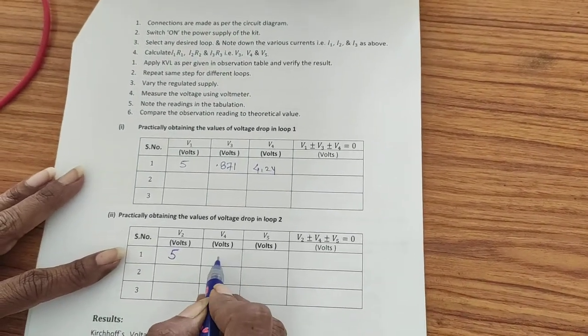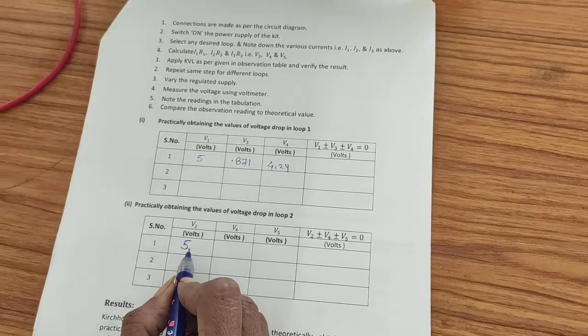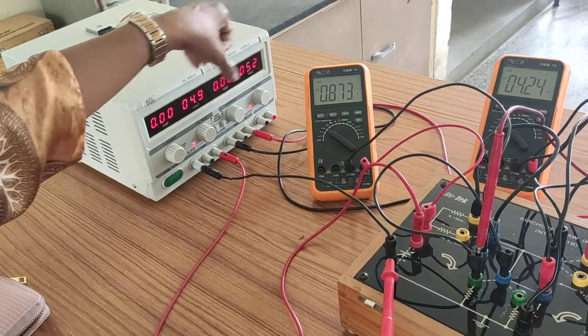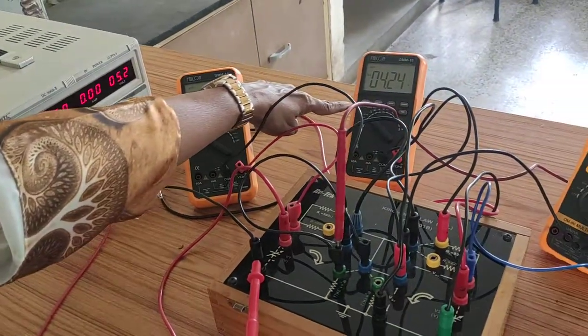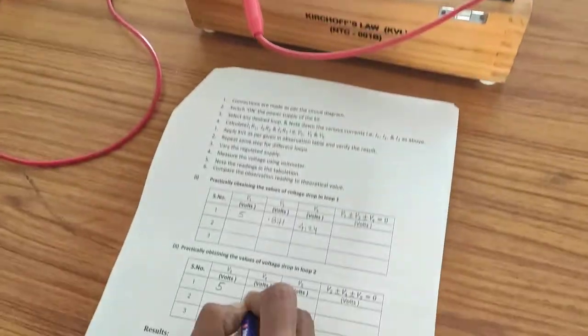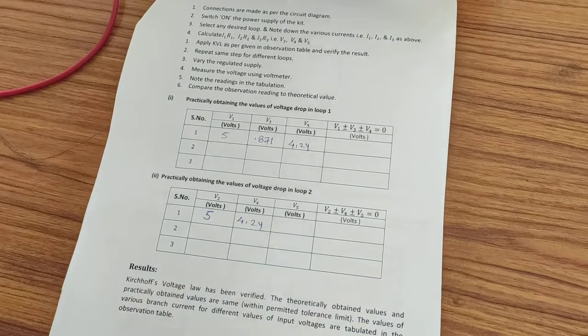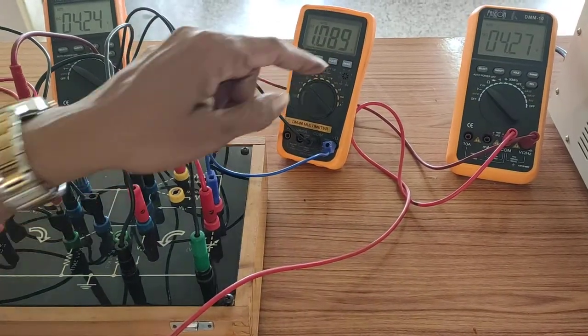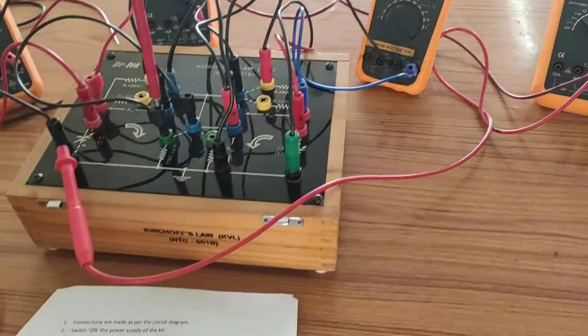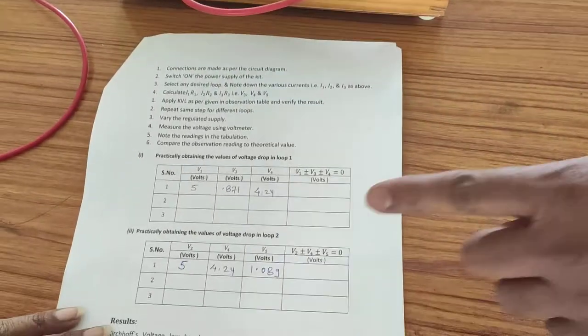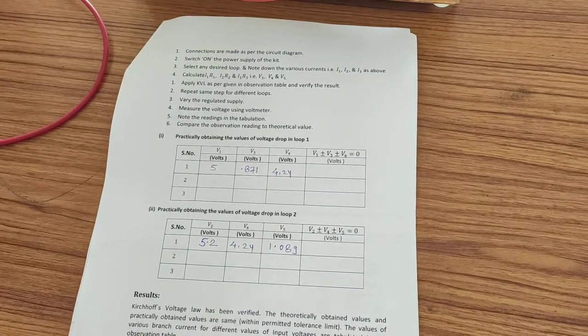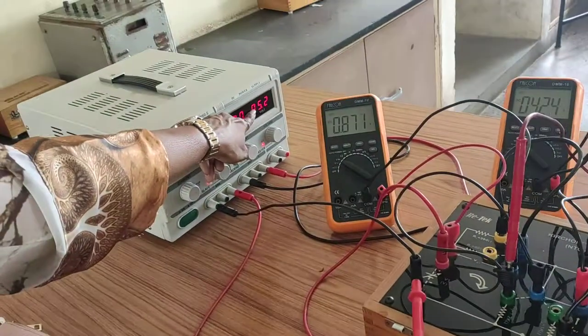Similarly for the second loop, V2 is 5 volts and V4 is 4.24. V5 is 1.089. Verifying KVL here, this should actually be 5.2, so I am taking 5.2 for this reading.